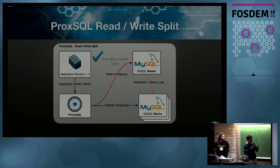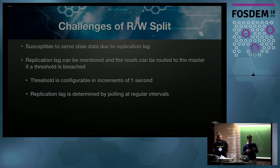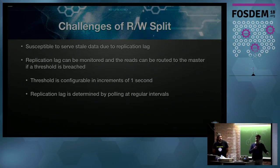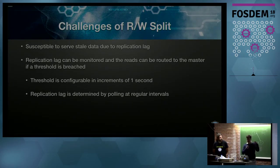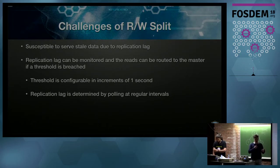Even with this configuration, stale data can still be an issue. ProxySQL does provide replication monitoring, so we can set a threshold — for instance, 30 seconds, or even one second — and say: if our data is more than that old, don't read from this slave. We overcome that problem, but there's still a possibility that our data will be one second stale. Additionally, this monitoring happens by polling the slaves at a configurable interval with a minimum of one second, giving up to two seconds of delayed data.